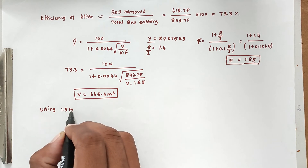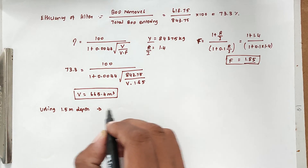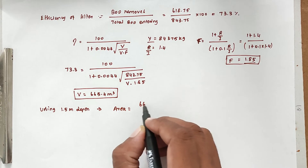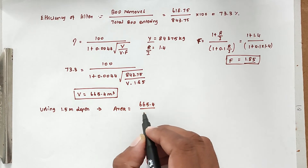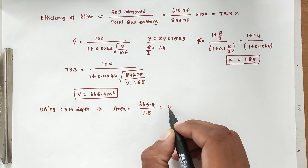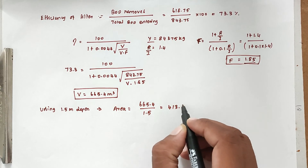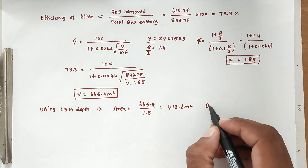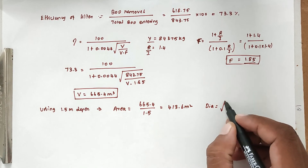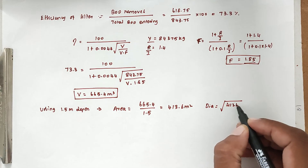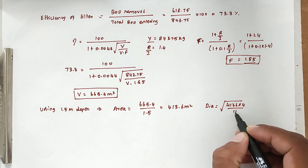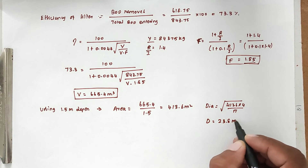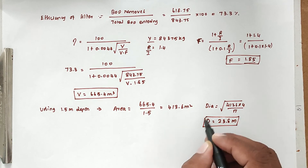Using a depth of 1.5 meters, the area equals 665.4 divided by 1.5, giving an area of 443.6 square meters. The diameter equals √(443.6 × 4 / π), giving a diameter of 23.8 meters for the high rate trickling filter.